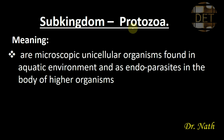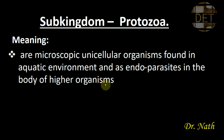What are Protozoa? Protozoa are microscopic unicellular organisms found in aquatic environments and as endoparasites in the body of higher organisms. Protozoa are microscopic organisms, meaning these organisms cannot be seen with the naked eye — they can only be seen with the help of a microscope.